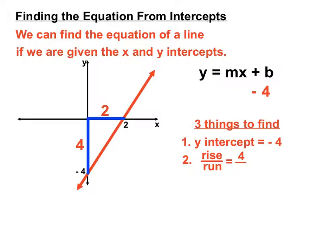And our run is the 2. We will have moved across from the origin 2 units to get to our x-intercept there. So that helps us find our rise over run.